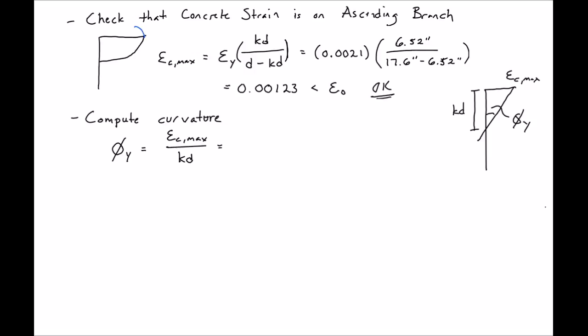So we can find this to be epsilon Cmax, which we just found, 0.00123, divided by our KD, which we found previously, 6.52, will equal 1.89 times 10 to the negative fourth radians per inch.